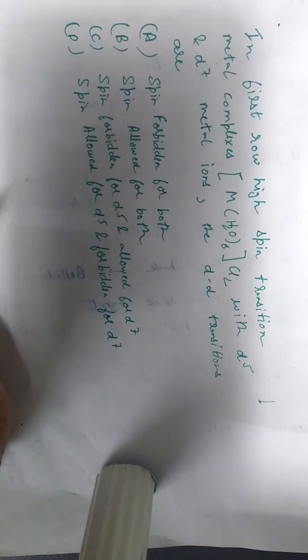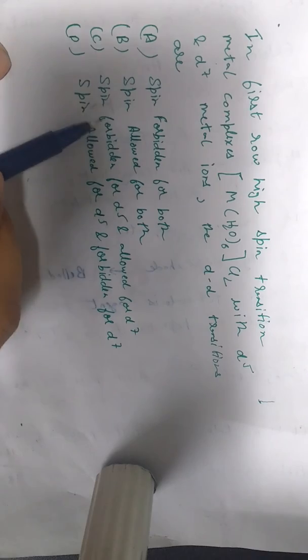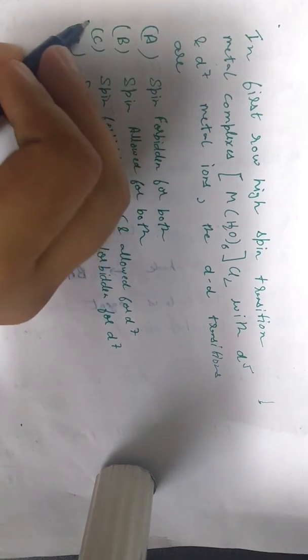So according to the question, so spin forbidden for D5 and spin allowed for D7, so the correct answer is C.